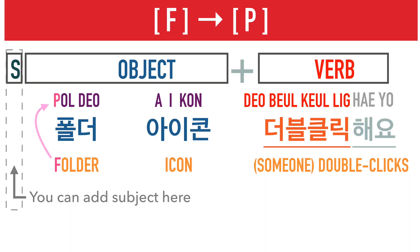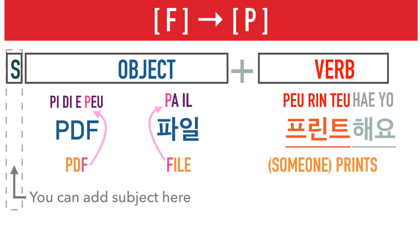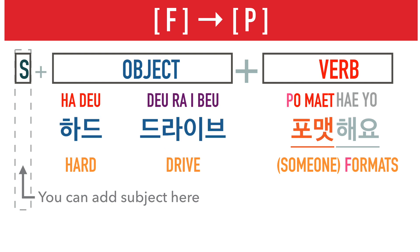And finally, once again, the ones that contain words where the F sound is changed to P. Folder icon double-click — 폴더 아이콘 더블클릭해요. PDF file print — PDF파일 프린트해요. Hard drive format — 하드드라이브 포맷해요.